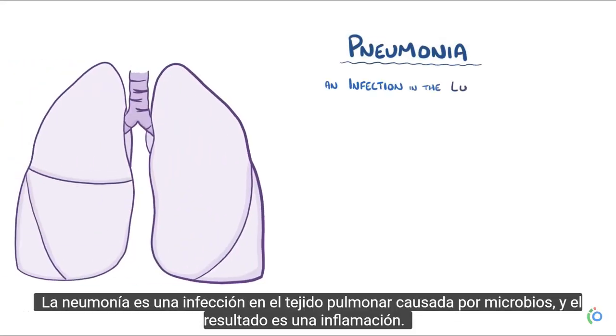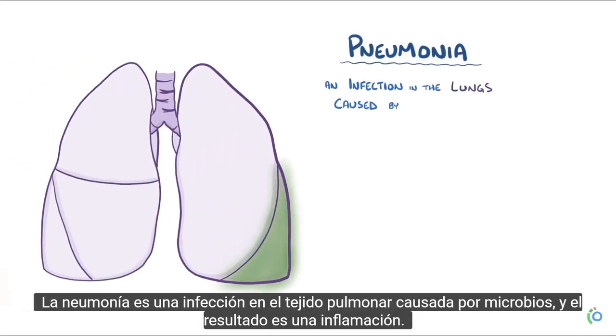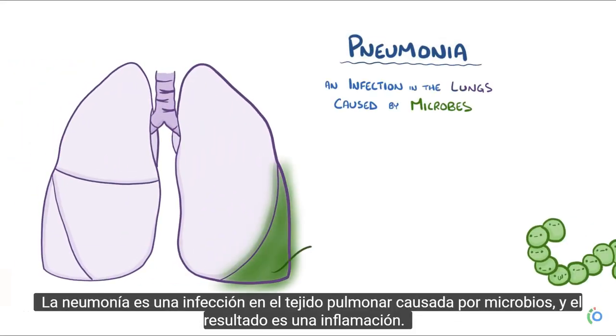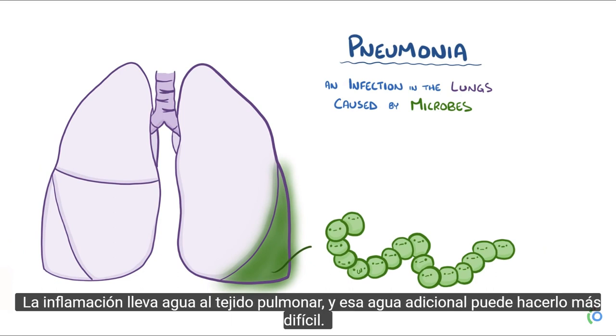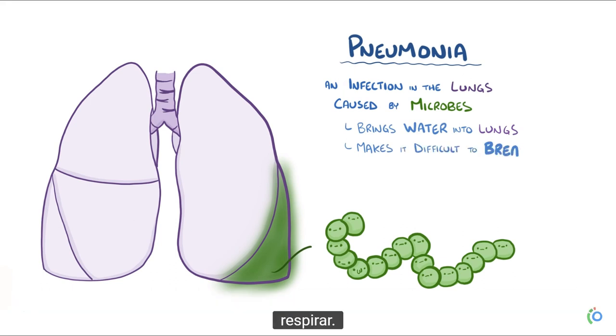Pneumonia is an infection in the lung tissue caused by microbes, and the result is inflammation. The inflammation brings water into the lung tissue, and that extra water can make it harder to breathe.